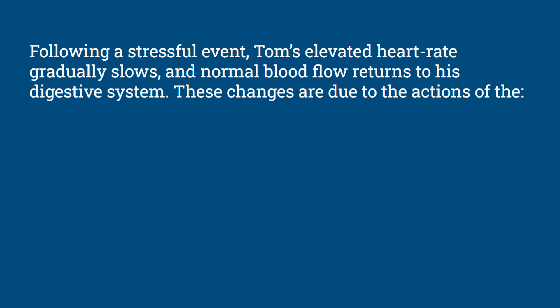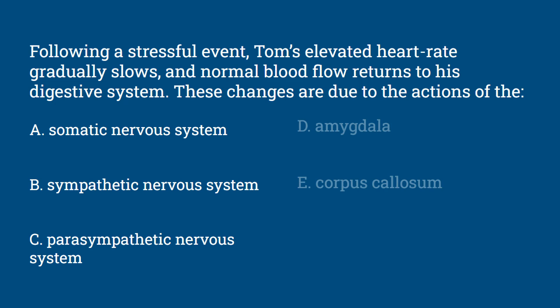Question 5: Following a stressful event, Tom's elevated heart rate gradually slows and normal blood flow returns to his digestive system. These changes are due to the actions of the — somatic nervous system, sympathetic nervous system, parasympathetic nervous system, amygdala, or corpus callosum?